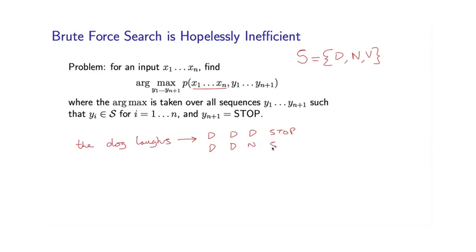d, d, n, stop. d, d, v, stop. d, n, d, stop. And so on and so on. Okay. So each valid tag sequence simply has one of these three tags, three possible tags, at each of these positions, followed by the stop sign.